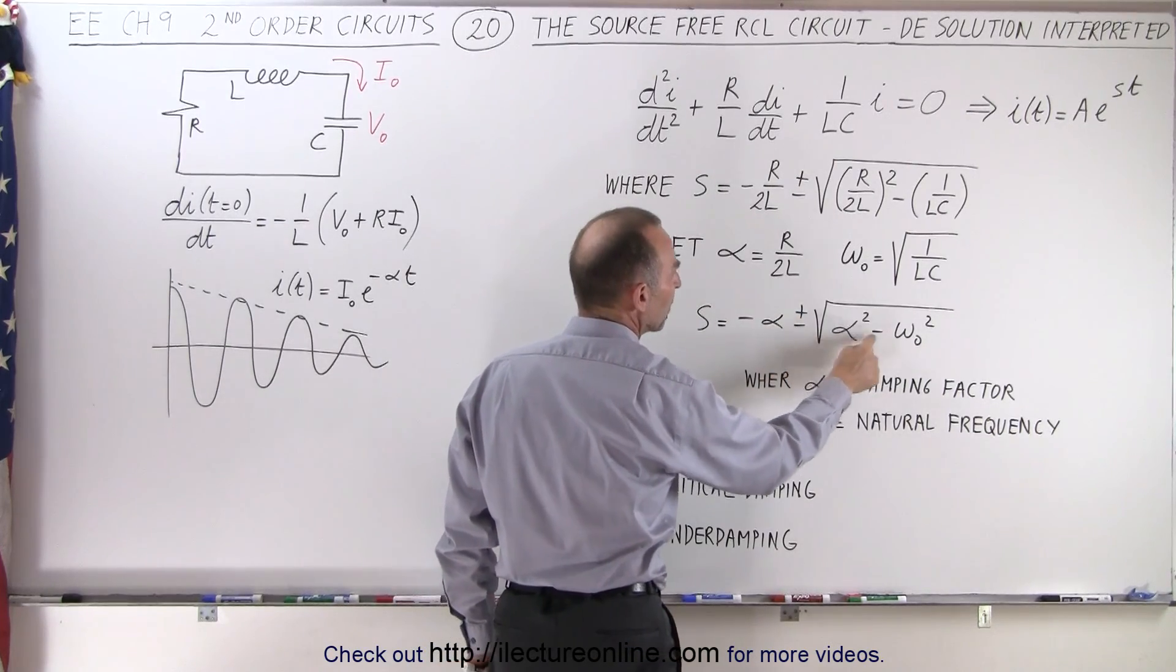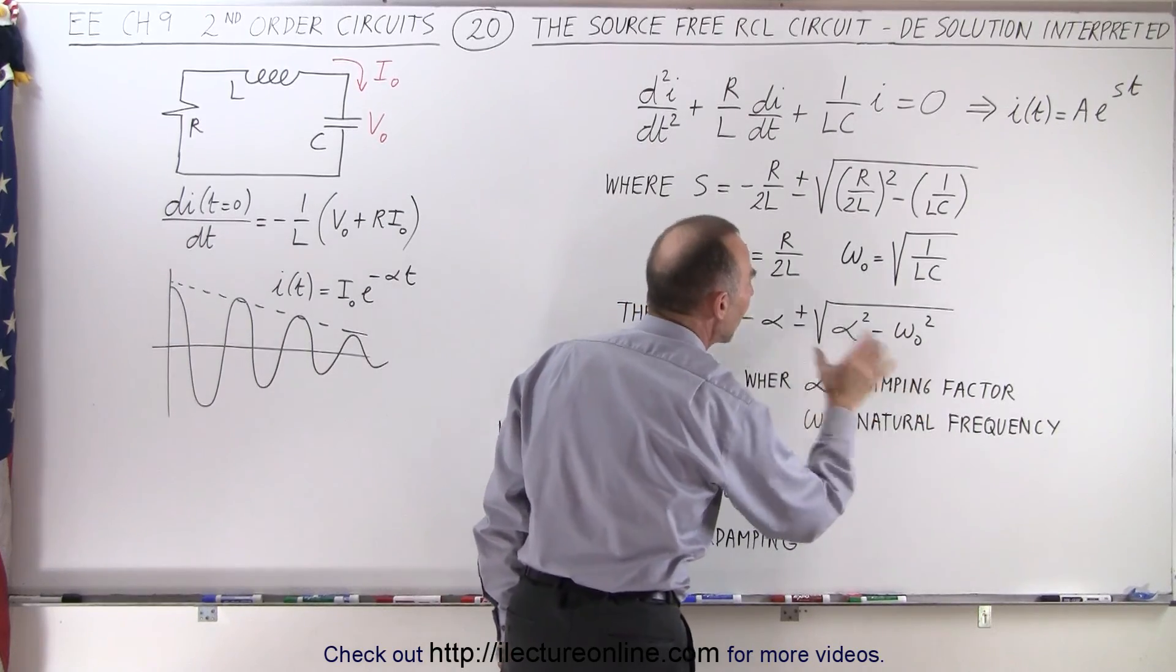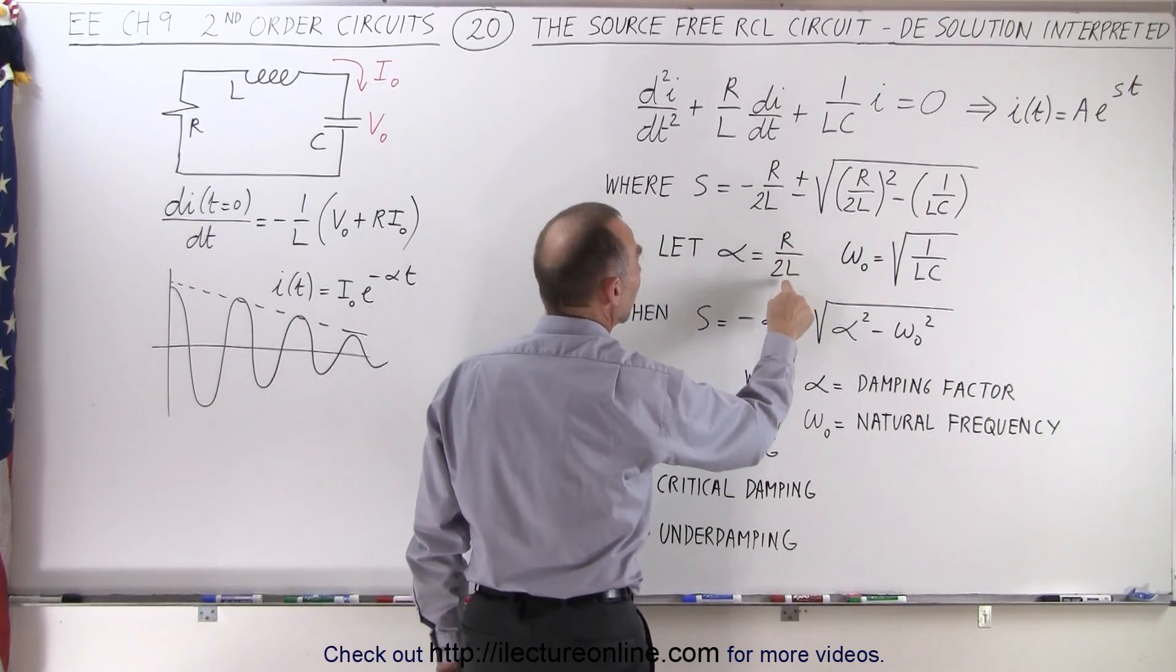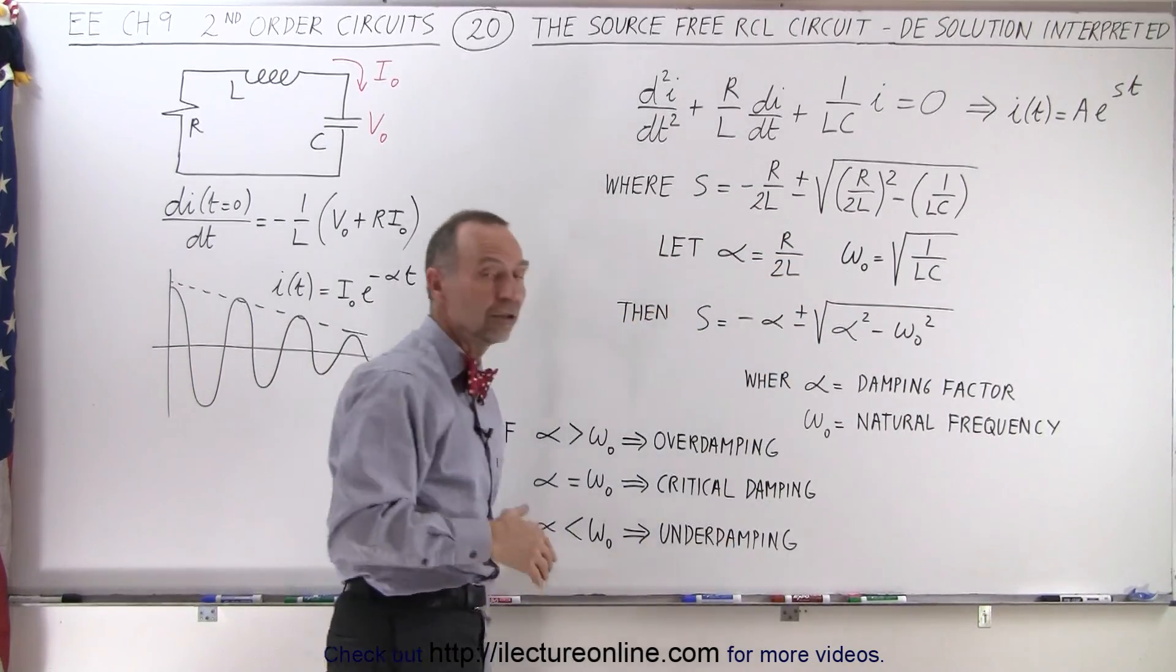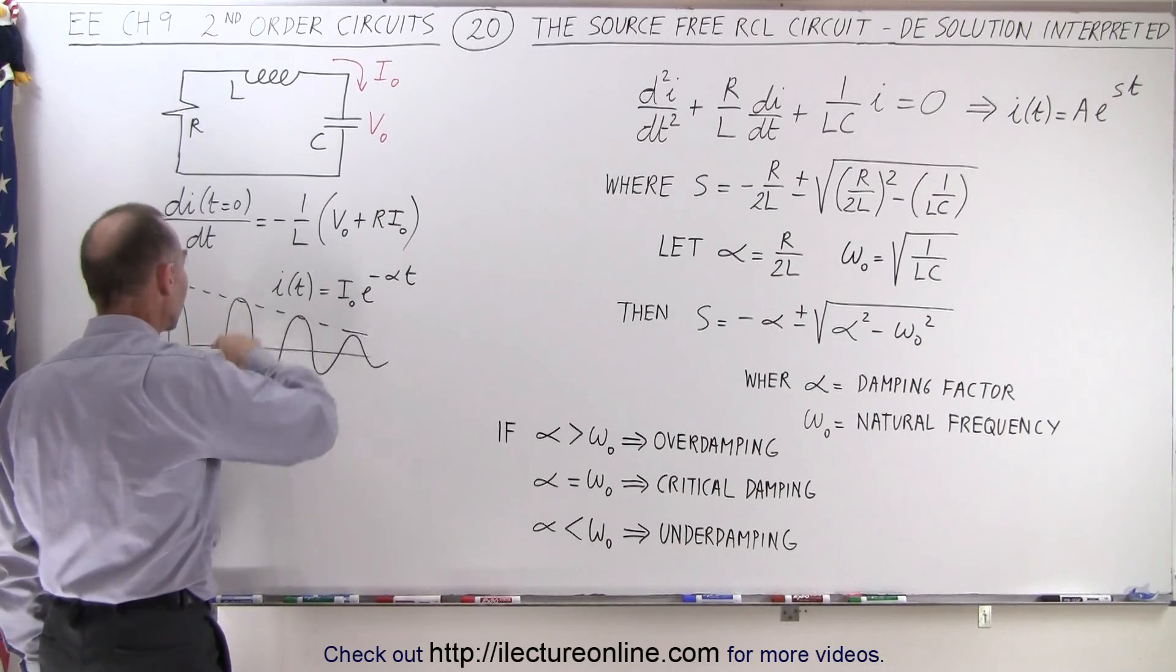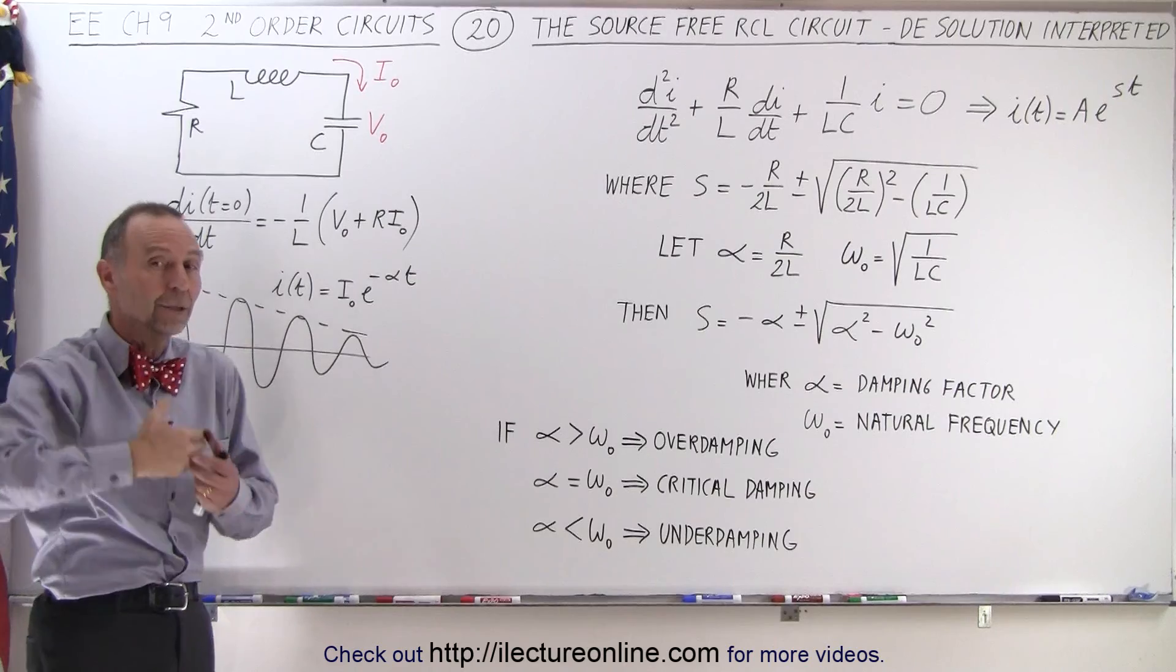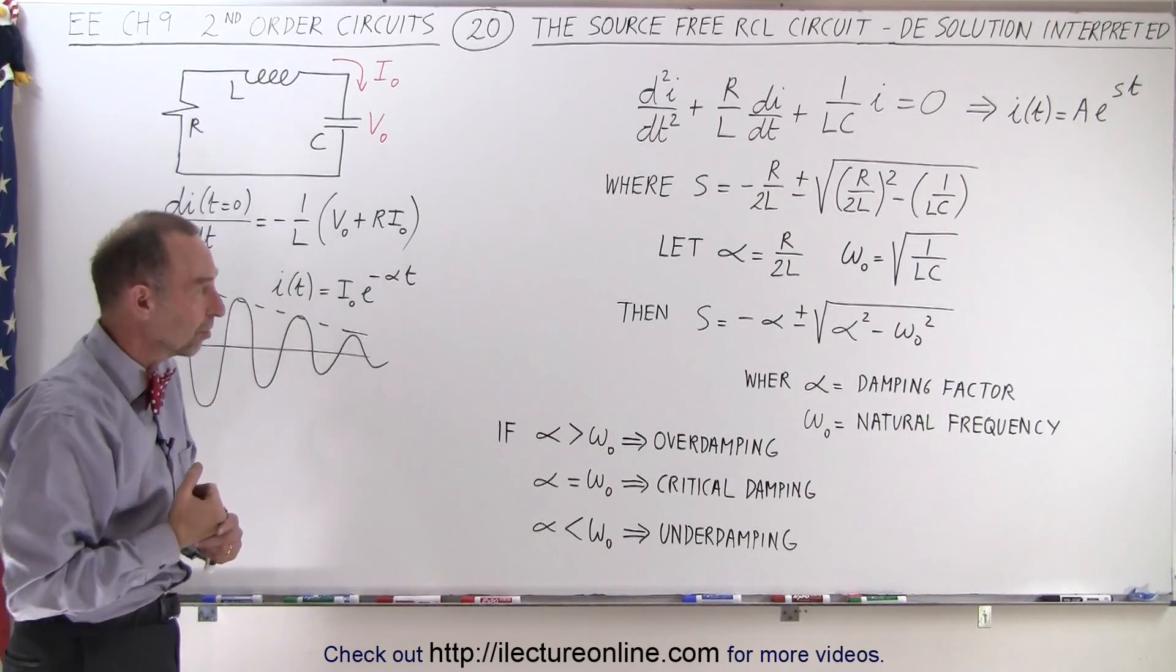Now the alpha is the damping factor. Notice that alpha is R divided by 2L, the resistance divided by twice the inductance. The bigger the resistor, the bigger alpha, the greater the damping factor, the quicker the oscillations will slow down because the resistor is what takes energy out of the system and the bigger the resistor, the faster the energy will come out of the system.